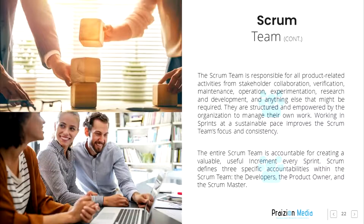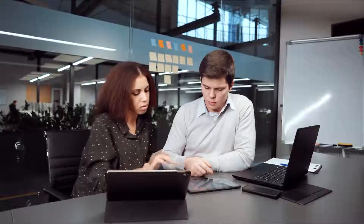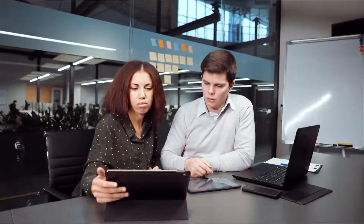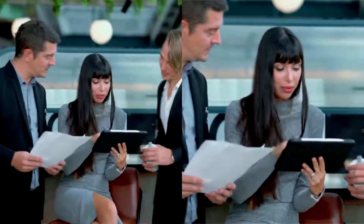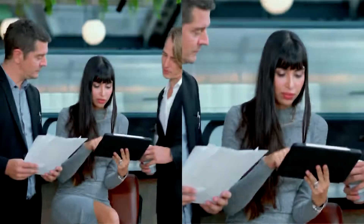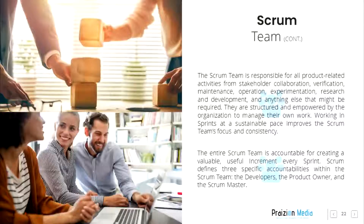The entire Scrum team is accountable for creating a valuable, useful increment every sprint. Scrum defines three specific accountabilities within the Scrum team: the developers, the product owner, and the Scrum master.